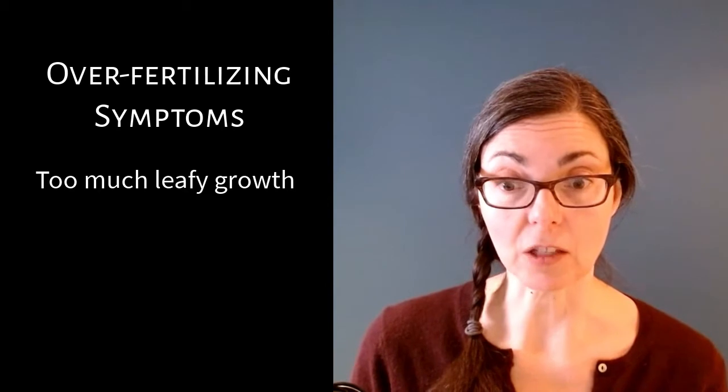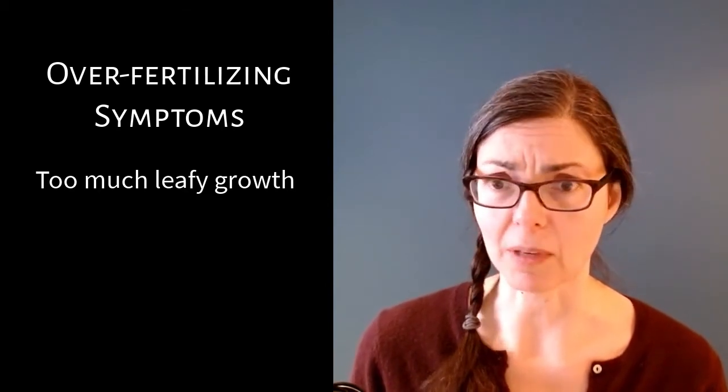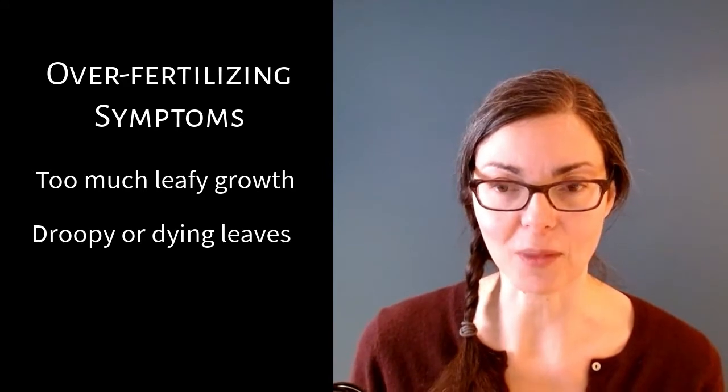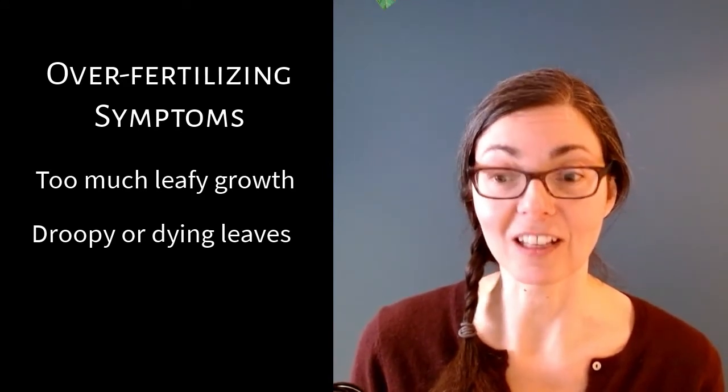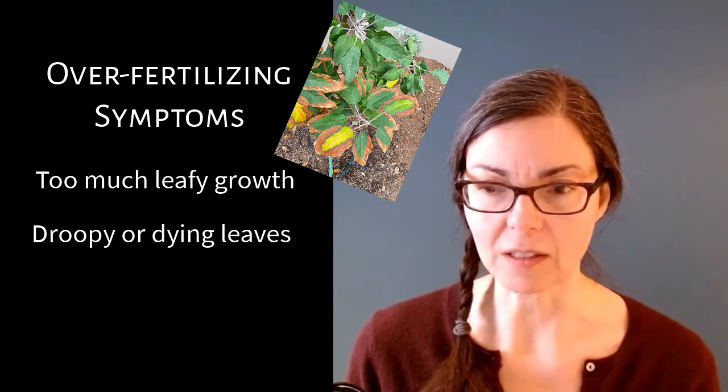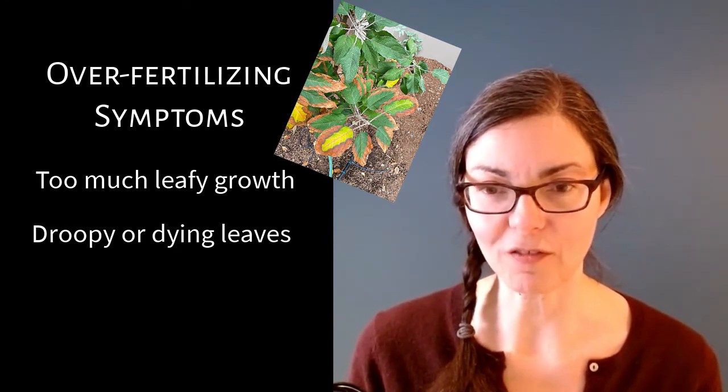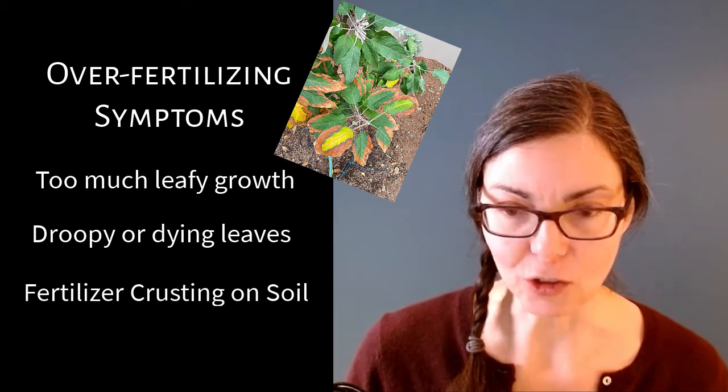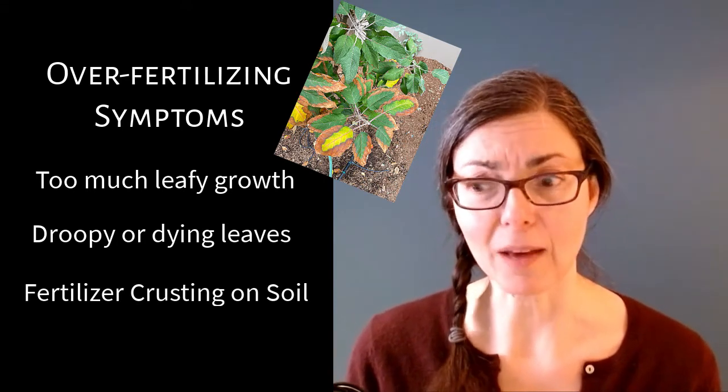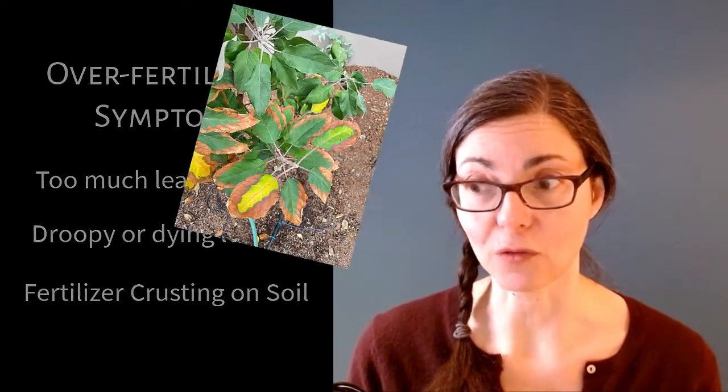Symptoms you may see: the leaves may be droopy, or the leaves may start dying back from the tips and from the outsides. That's what's happening to you. Other things you might notice—and from this picture I'm not sure if it's happening—but you may see a crust of the fertilizer on the soil itself. That's another sign that perhaps you're over-fertilizing your fruit tree.